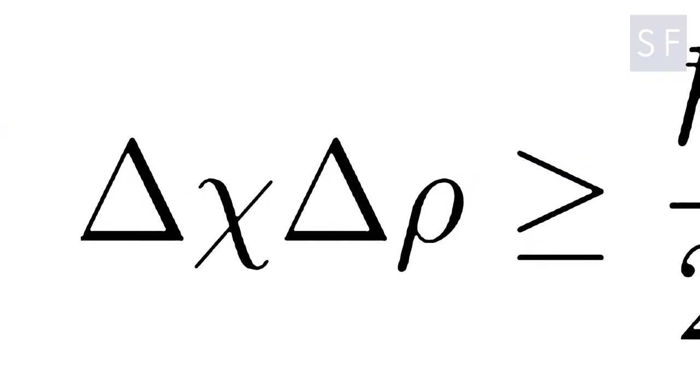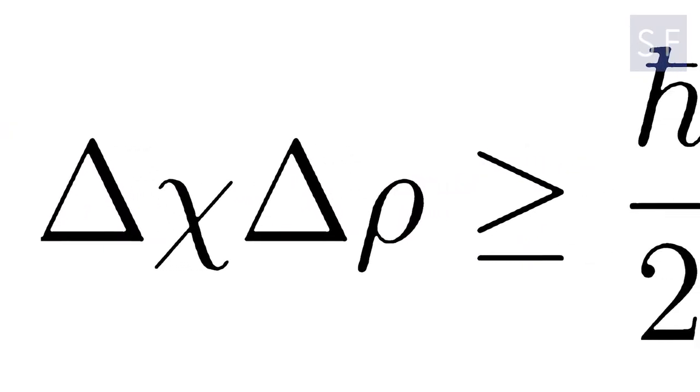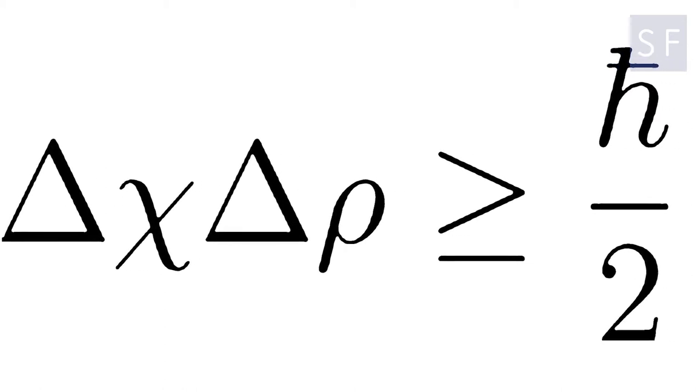All of the structure in the universe that we see came from what's called the quantum uncertainty principle — the fact that physical objects cannot sit still. You can't know their position and their momentum simultaneously. The fact that everything fluctuates at some irreducible level is an extremely successful theory of the origin of all structure in the universe. It's an amazing thing.